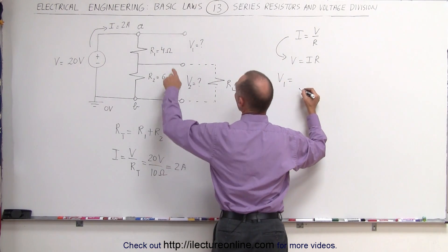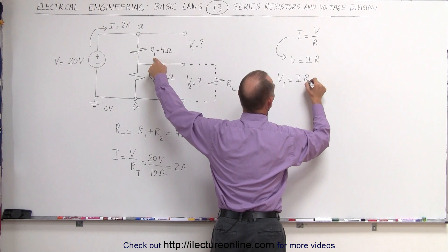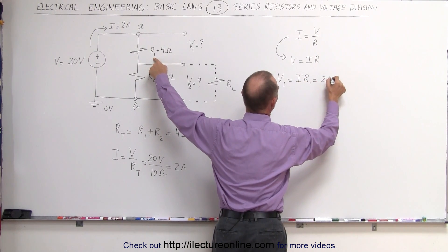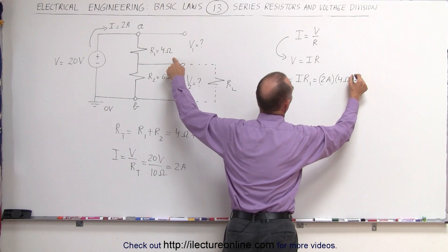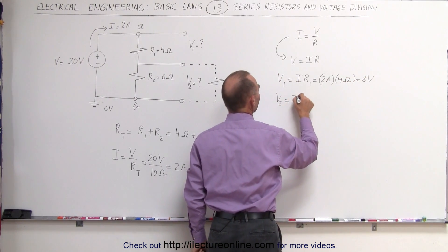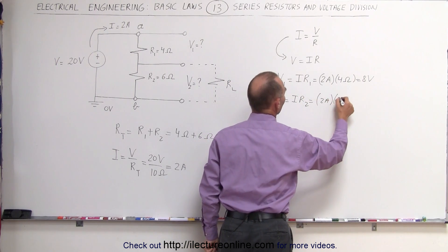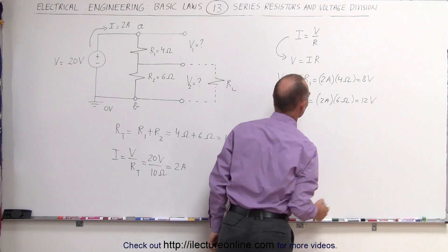V1 is equal to I times R1, which is 2 amps times 4 ohms, which is 8 volts. And V2 is equal to I times R2, which is equal to 2 amps times 6 ohms, which is equal to 12 volts.